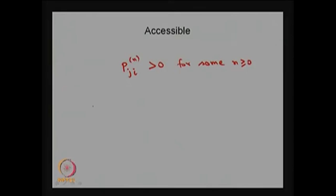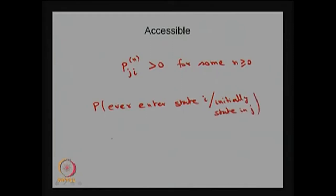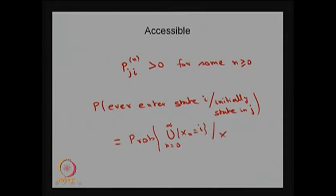Using this we can write down what is the probability of ever entering state i given that initially it was in state j. That is nothing but the union of all the events corresponding to Xn = i given that X0 = j. You can find out what is the probability of ever entering state i given that initially the system is in state j — that is the probability of the union of {Xn = i} given that X0 = j.